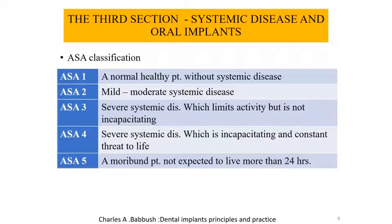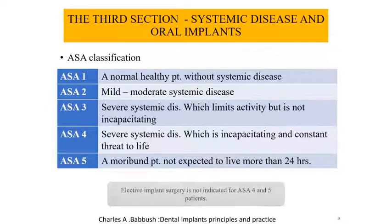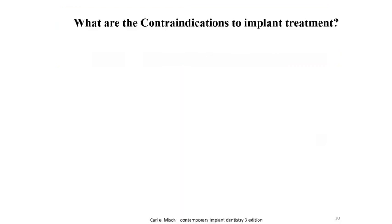In the third section, we have the ASA classification. ASA 1 is for the normal healthy patient without systemic disease. ASA 2 is for mild to moderate systemic disease. ASA 3 is for severe systemic disease. ASA 4 is severe systemic disease which incapacitates and is a constant threat to life. ASA 5 is a moribund patient. Elective implant surgery is not indicated for ASA 4 and 5 patients.